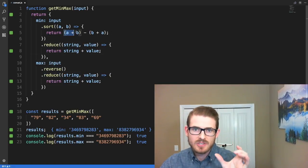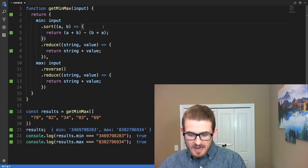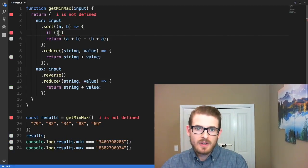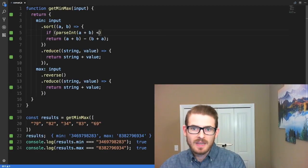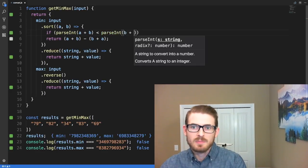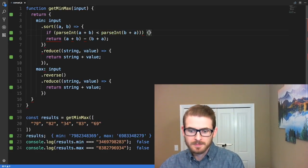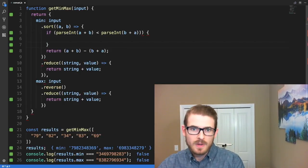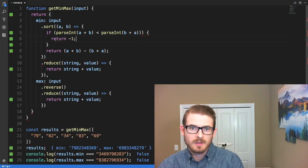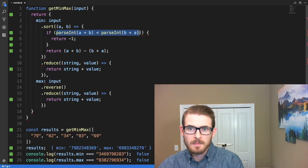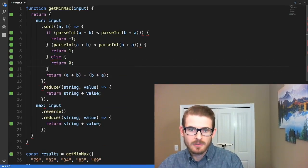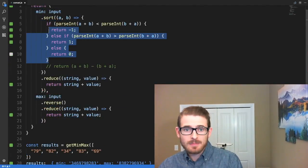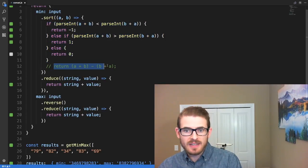Instead what we could say is if parseInt of a plus b is less than parseInt of b plus a, we could return a negative number. And then otherwise we return a positive number. And then if it's the same, we return zero. This is the exact same logic basically as line 12 was. The only difference is we're actually writing out how it works.